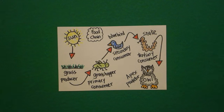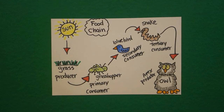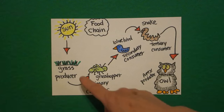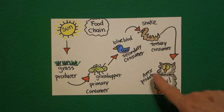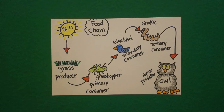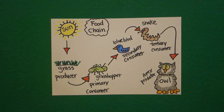Here's my food chain all colored in. There are many different types of food chains, with producers going all the way up to the predator at the end. This shows you how all food chains begin initially with plant life but end up in animal life.